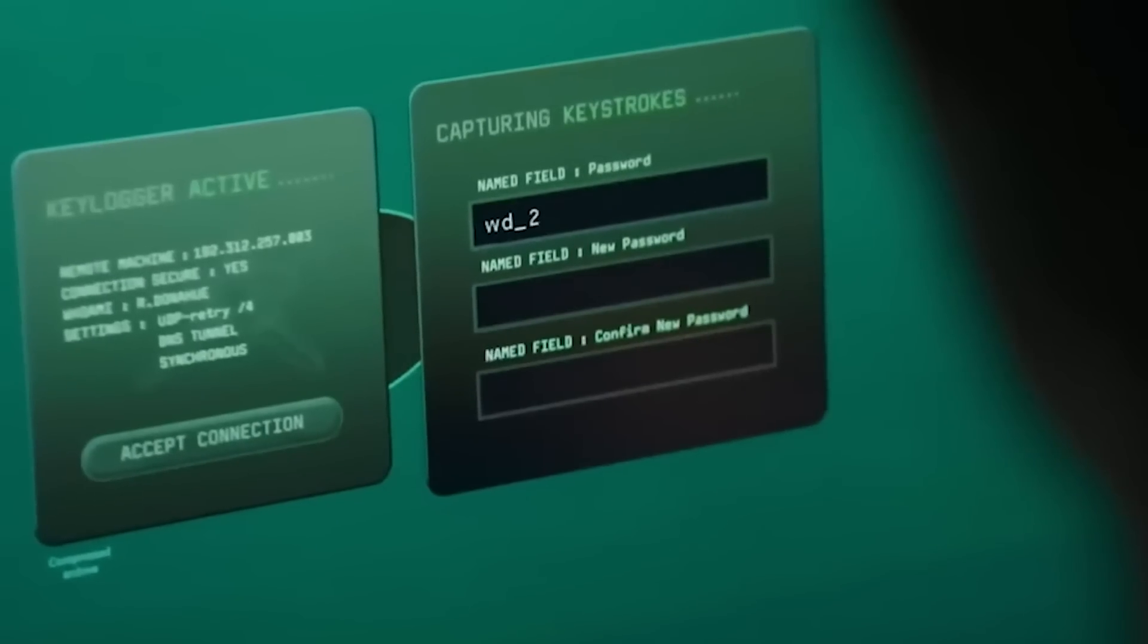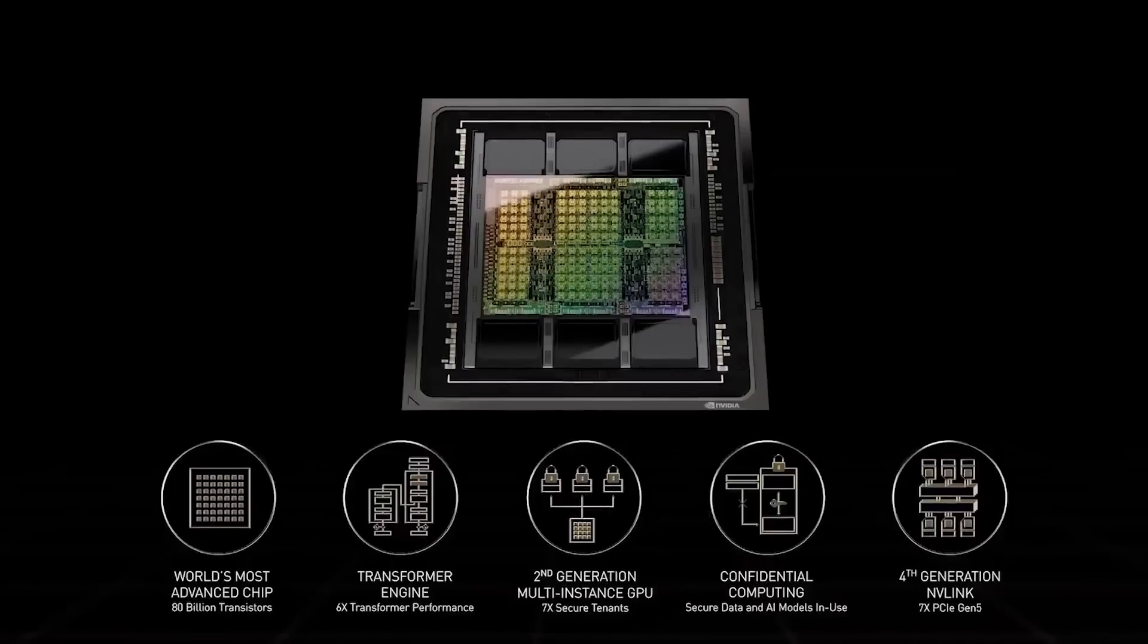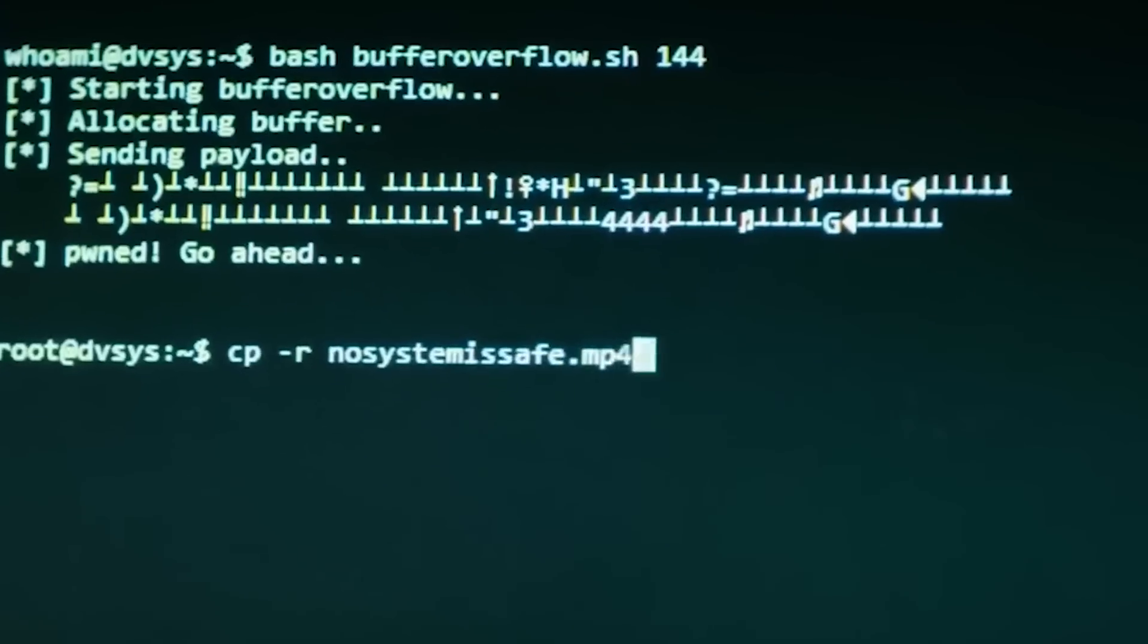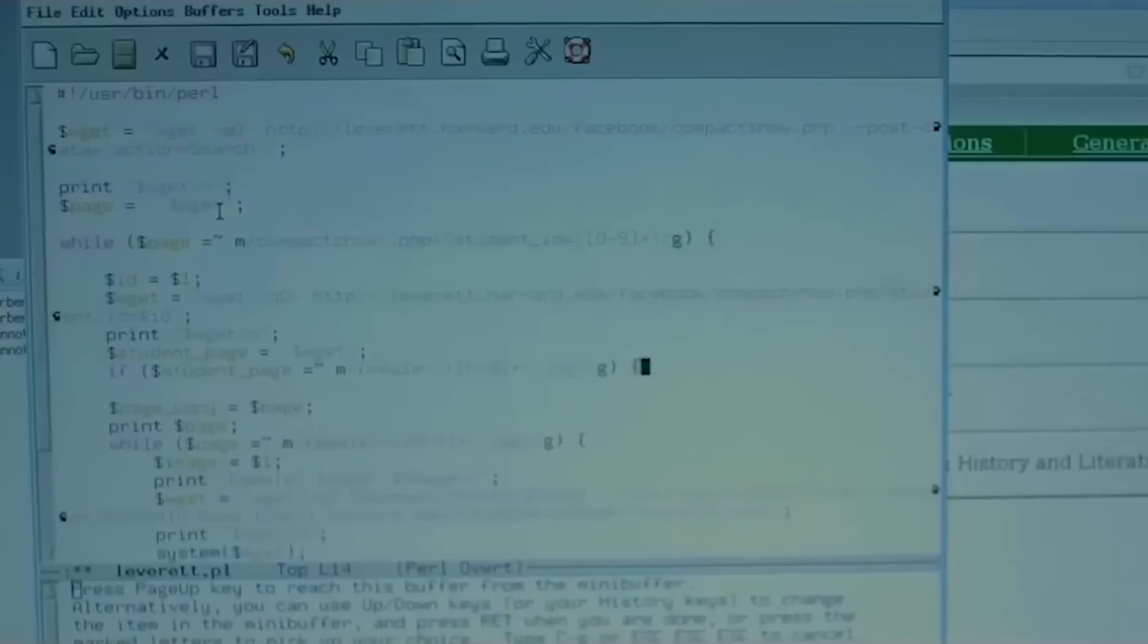By connecting 8 H100 chips, a DGX H100 service system can be formed. Combining 9 DGX H100 service systems creates a DGX pod, and linking 32 DGX pods results in a SuperPod, one of the world's most powerful computing systems.